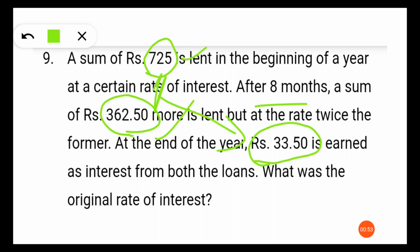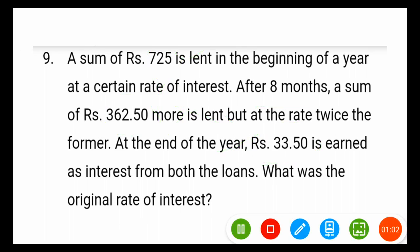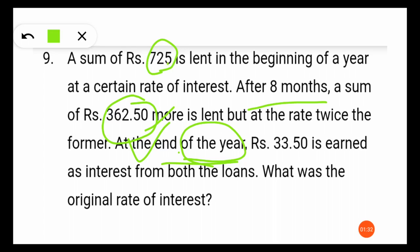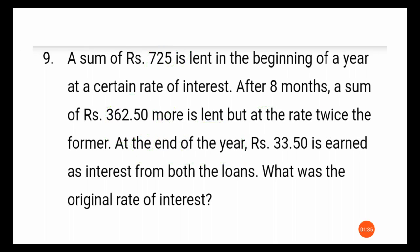The total simple interest earned from both amounts is 33 rupees 50 paisa. The key point to remember: for 725 rupees, calculate simple interest for the whole year (12 months), whereas for 362.50 rupees, we calculate interest for only four months — because this money was lent after eight months, and the remaining period in the year is four months.